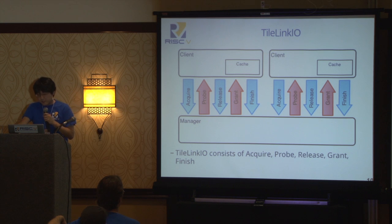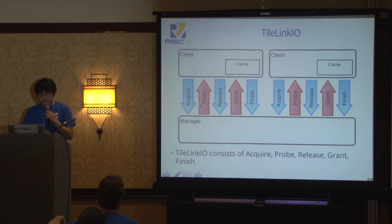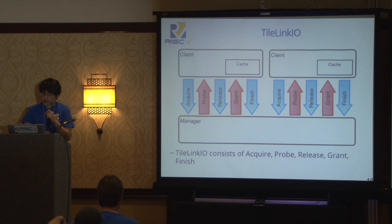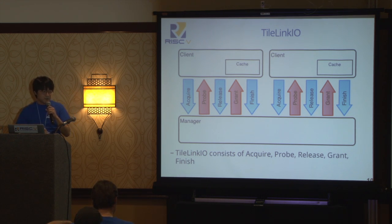The TileLink-IO is the most important interface. It consists of five sub-bundles: acquire, probe, release, grant, and finish. All of these are decoupled, meaning all interfaces go across a ready-valid handshake so you can insert arbitrary queues. Since a client would typically be on a different voltage domain, you can also place async FIFOs across the TileLink-IO.